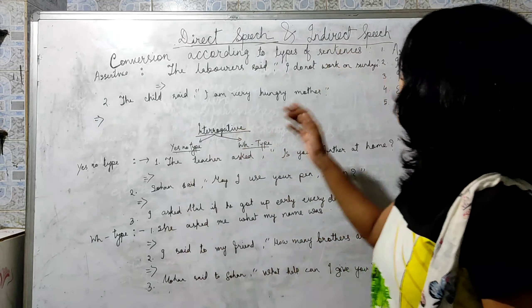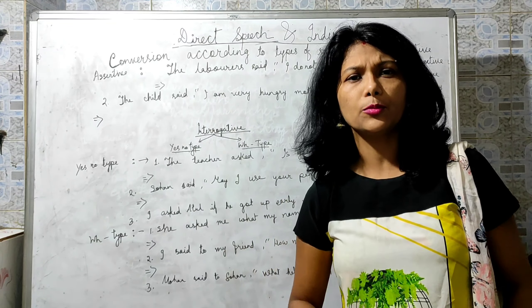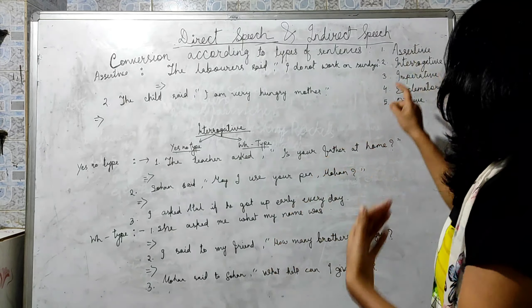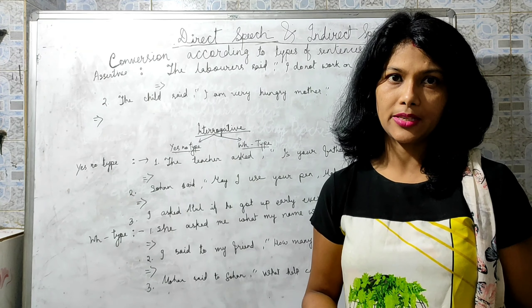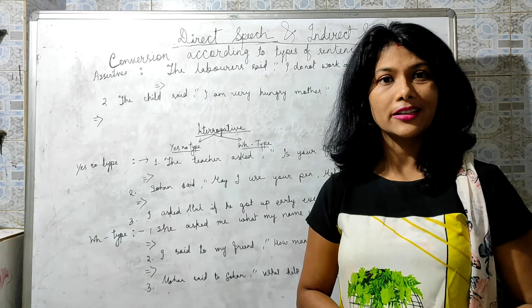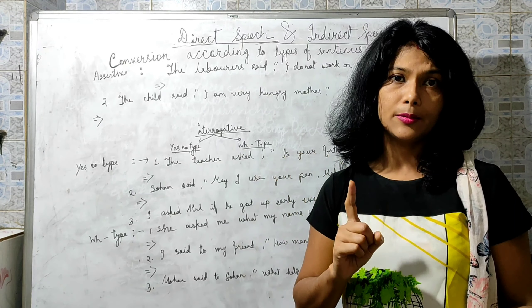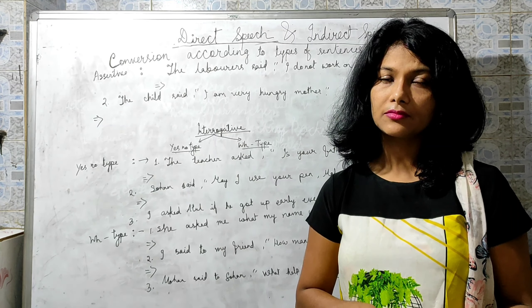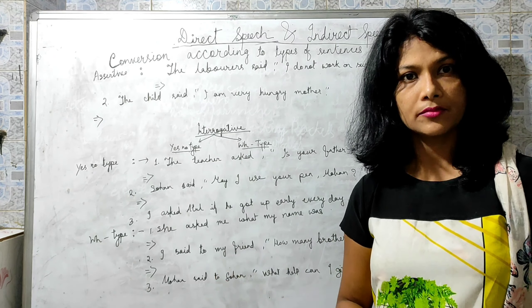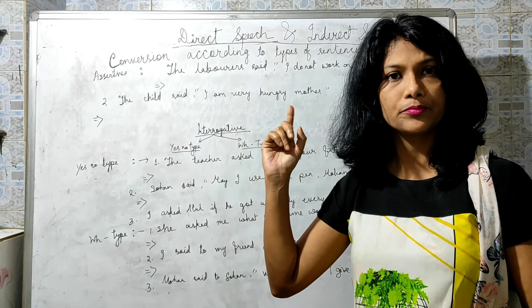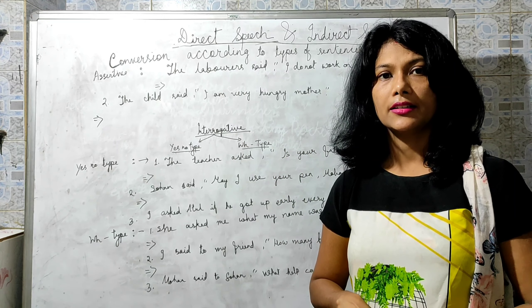The types of sentences are: assertive, interrogative, imperative, exclamatory, and optative. A brief introduction: assertive sentences are yes/no type — 'I go to school,' 'I like you,' 'I don't like you.' Assertive has two types: declarative and negative.